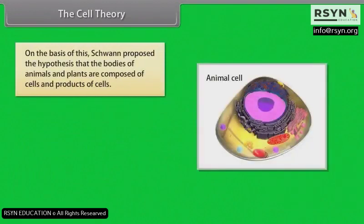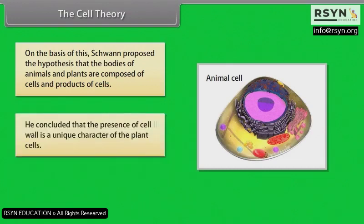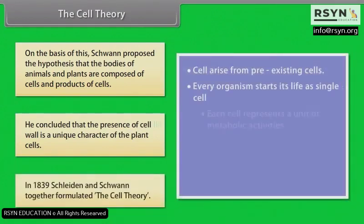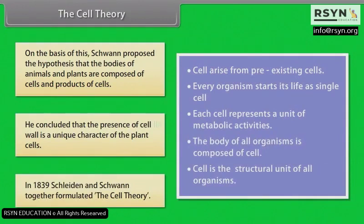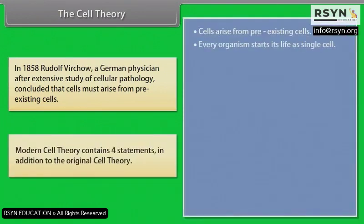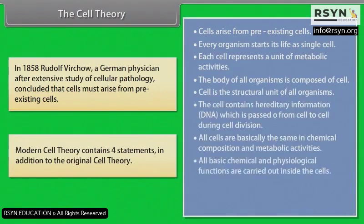On the basis of this, Schleiden proposed the hypothesis that the bodies of animals and plants are composed of cells and products of cells. He concluded that the presence of cell wall is a unique character of plant cells. In 1839, Schleiden and Schwann together formulated the cell theory. In 1858, Rudolf Virchow, a German physician, after extensive study of cellular pathology, concluded that cells must arise from pre-existing cells. Modern cell theory contains four statements in addition to the original cell theory.